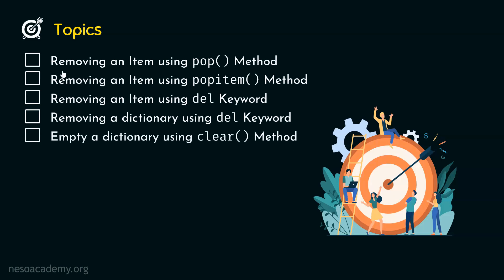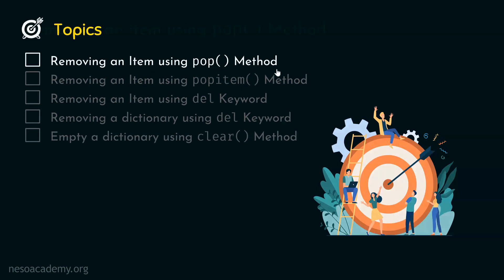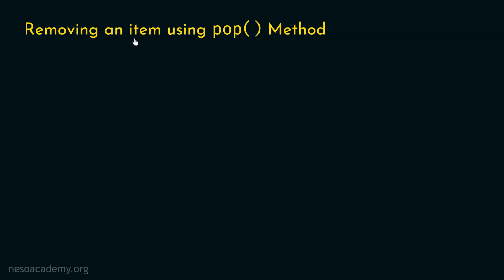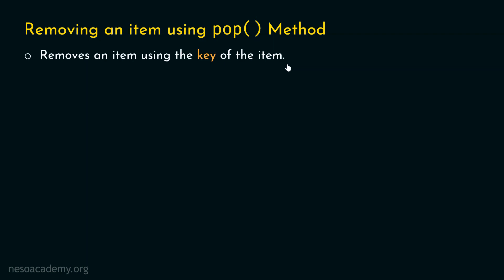Let's start with the first topic: removing an item using the pop method. We can remove an item, or a key-value pair, of a dictionary using the pop method. It simply removes an item using the key of that item. So if we want to remove a specific item of a dictionary, we can refer to the key of that item and delete it using the pop method. Pop method also returns the deleted item's value — not the key, but the value.